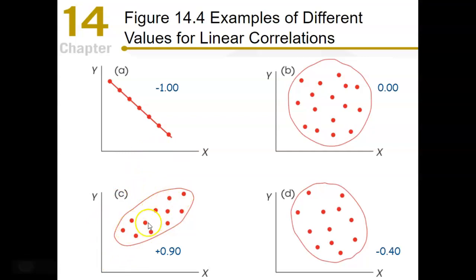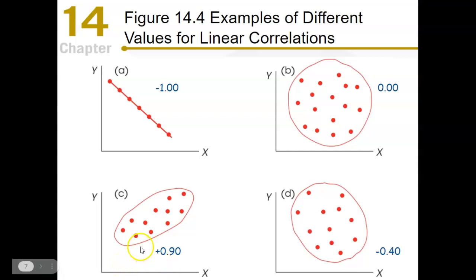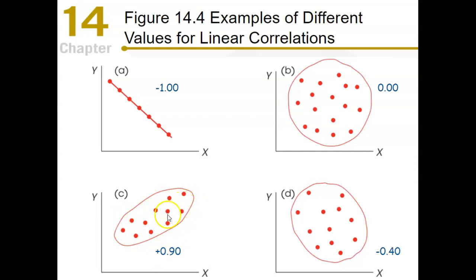Looking at diagram C, we do have a line moving upward, but the points are not exactly falling on the line. As X moves upward, Y tends to go up, but it's not moving up in a perfect or consistent amount. Sometimes X moves up and we get a Y that's below where we'd expect, so this dynamic is not as consistent.